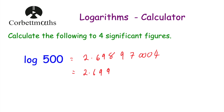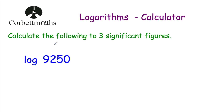Our next question: calculate the following to three significant figures. We've got log of 9,250. Again, because there's no base mentioned, this is log to base 10. We're saying what power do we raise 10 by to get 9,250. As we've seen, 10 cubed is 1,000 and 10 to the power of 4 is 10,000, so this is going to be between three and four. Let's use our calculator to work this out.